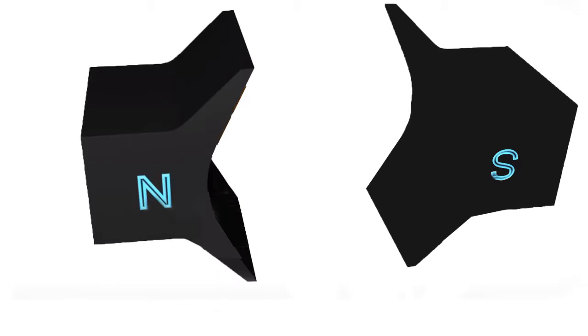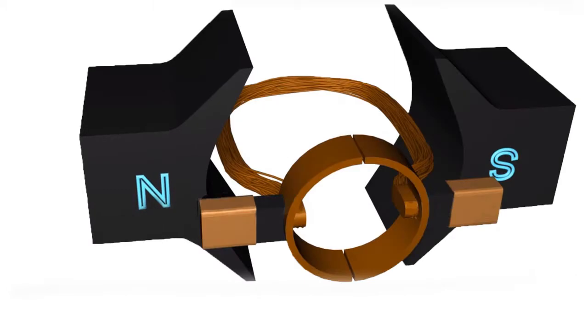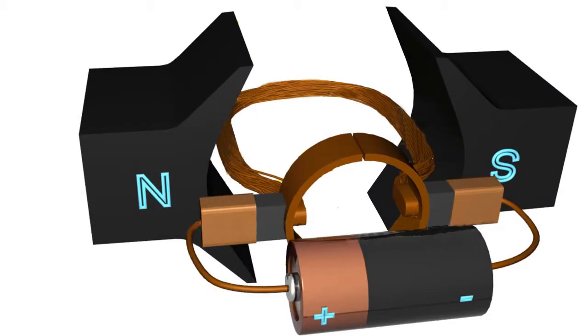Now, the most basic way to explain how a motor works would be with one coil. If we supply a DC current through this coil, the current would flow through like this.